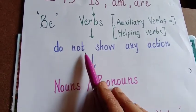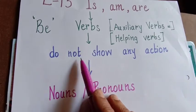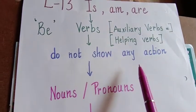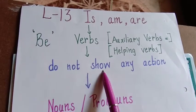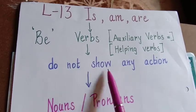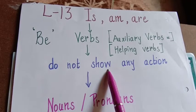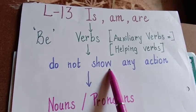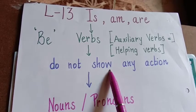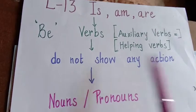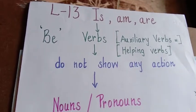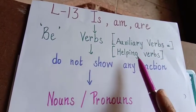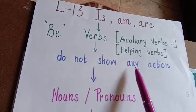These auxiliary verbs, or the B verbs, they do not show any action. In the last video I recorded, I taught you only about action words — verbs that show only actions. But these verbs do not show any action. They are known as auxiliary verbs, auxiliary meaning helping verbs, and they are also known as B verbs.